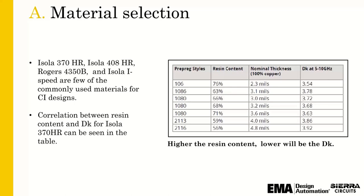Isola 370 HR is probably the most common material. 408 HR is used widely in automotive and is a good blend between reliability and electrical properties. Rogers 4350 is a very common material, and there's also Isola high speed. Electrical properties aren't the only important factor — how the materials manufacture also matters. Panasonic's Megatron series has been very popular, but there are now many competing materials that are equivalent in a lot of ways.